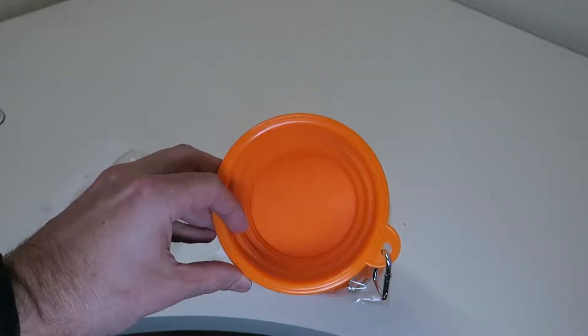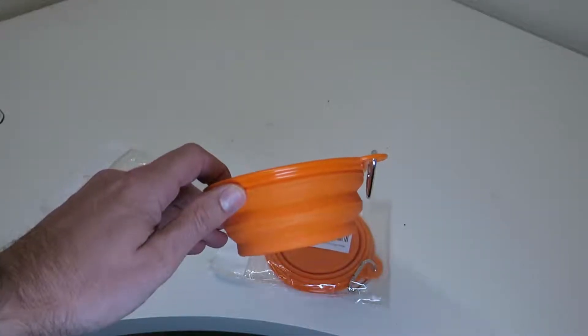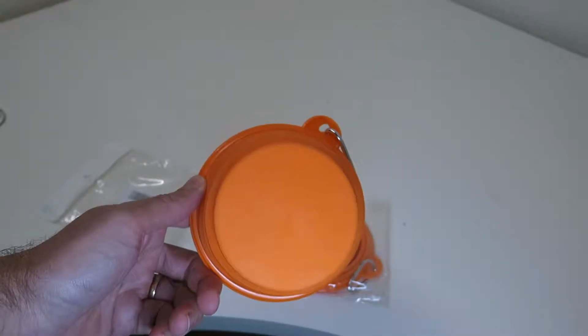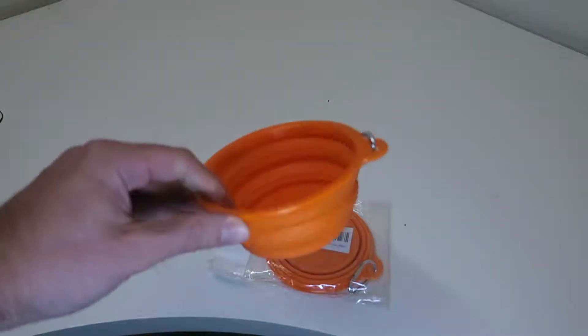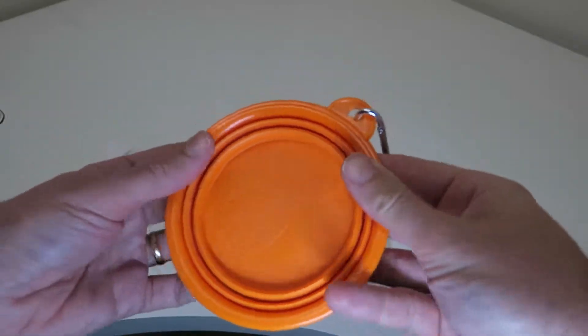This is the NCDE collapsible silicon pet water and feeding bowl. It holds five cups of water, and the best feature is that it's so light and strong you can collapse it like this.